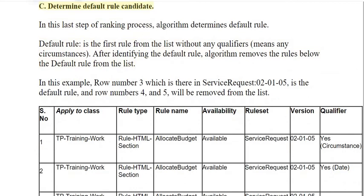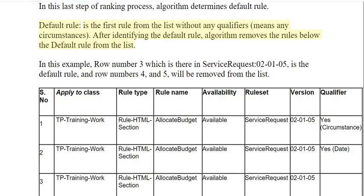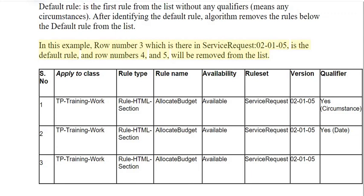Step C: Determine default rule candidate. In this last step of the ranking process, the algorithm determines the default rule. The default rule is the first rule from the list without any qualifiers — meaning no circumstances. After identifying the default rule, the algorithm removes the rules below the default rule from the list. In this example, row number 3, which is in Service Request 02-01-05, is the default rule, and row numbers 4 and 5 will be removed from the list.